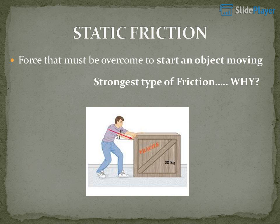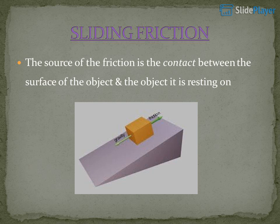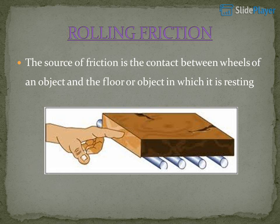Static friction is the force that must be overcome to start an object moving. It is the strongest type of friction. Sliding friction occurs when the source of friction is the contact between the surface of the object and the surface it is resting on. Rolling friction occurs when the source of friction is the contact between the wheels of an object and the floor or surface it is resting on.